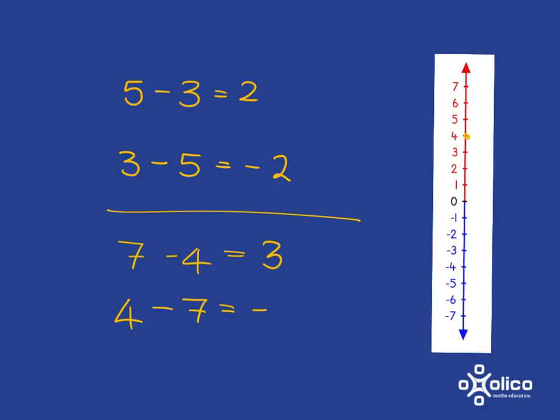And what do we do? We start at 4. We know that we are going to be going down. And we're going to go down 7 steps. So let's jump down those 7 steps. 4 steps gets me to 0. And 3 more steps to make up my total of 7 steps will get me to negative 3.